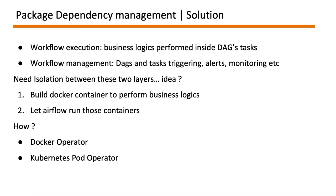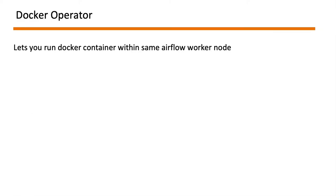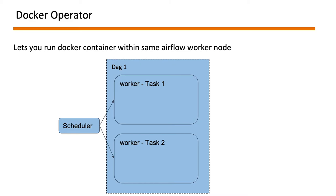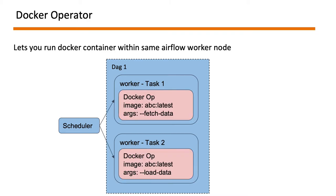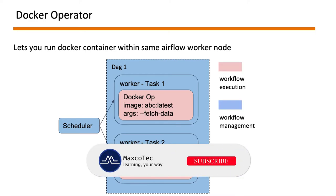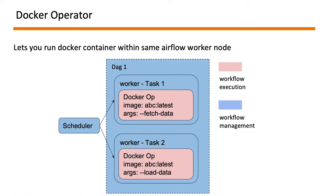With these operators you can bake in your Python code with its specific dependencies and let Airflow run them. You don't need to manage Python dependencies in Airflow, and you won't encounter disaster scenarios where two DAGs have conflicting dependencies, because each task runs in its own private container. The Docker operator lets you run Docker containers within the same Airflow worker node. Whenever you define a Docker container task in your DAG it spins up a separate Docker container within the same worker node. You can call the same image with different commands — for example, one task fetching data and another loading data. The blue color represents workflow management and the light orange represents workflow execution.